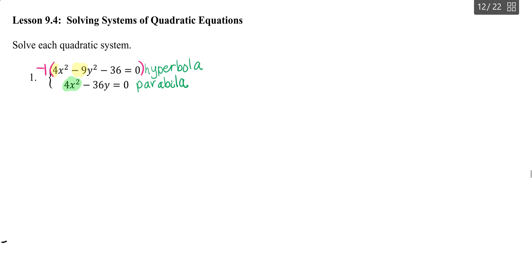then I am simply going to have negative 4x squared plus 9y squared plus 36 equals 0. My second equation is going to stay the same, 4x squared. And then I have minus 36y equals 0.